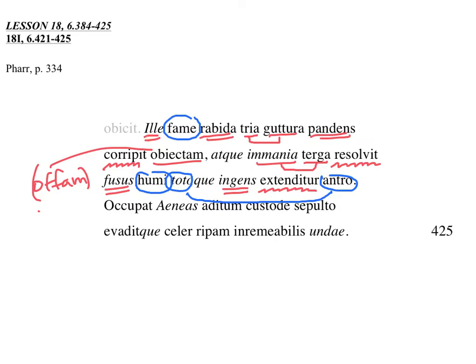One more time. He raging with hunger, extending his three throats, snatched up the offam, the cake having been thrown, and loosened his huge backs. Having poured himself out on the ground, and huge, is extended, is laid out in the whole cave. Put an in here, it's ablative of place where, showing us where he's laid out.